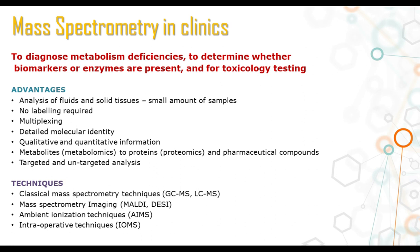Just a bit of introduction about mass spectrometry in clinics. In these days, it is routinely used to diagnose metabolism deficiencies, to determine biomarkers and enzymes, and for biotoxicological testing. There are many advantages of mass spectrometry over other techniques: it can be used to analyze fluids and solid tissue, not a lot of sample is necessary, there is no labeling required, we can multiplex analysis, obtain detailed molecular identity, do qualitative and quantitative analysis, and analyze a large variety of biomolecules such as metabolites, proteins, and pharmaceutical compounds. We can also use these methods for targeted or untargeted analysis, the latter being more relevant for discovery-based research.